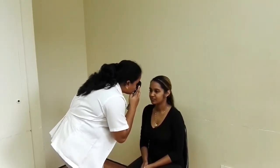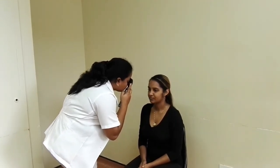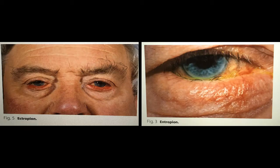Eyelashes are observed for their position, their presence or loss, or crusting and scaling. Some important conditions that may be encountered include blepharitis, stye, chalazion, ectropion, and entropion.